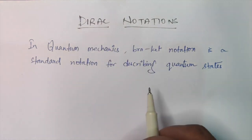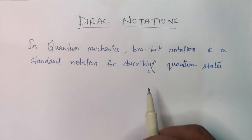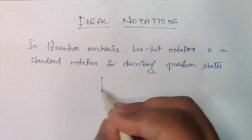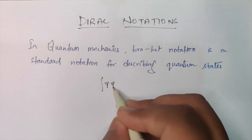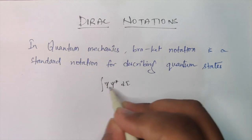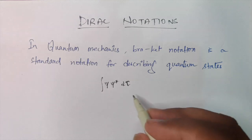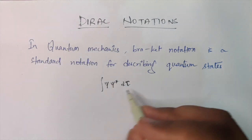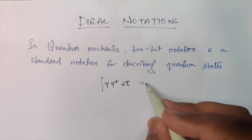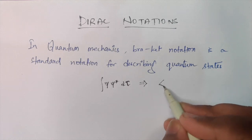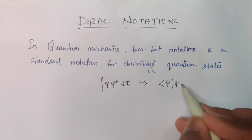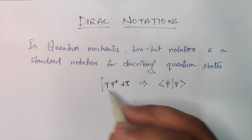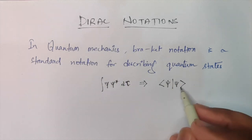And since this has been added recently in our GATE syllabus, it's very important to understand. You might be familiar with a notation like psi psi-star d-tau. You might have seen notation like that. But you can express the same thing in Dirac Notation. This is the normal integral notation, and this is called your Dirac Notation.